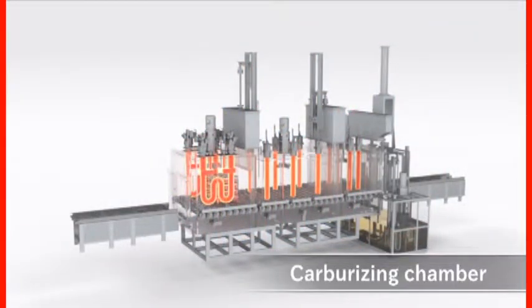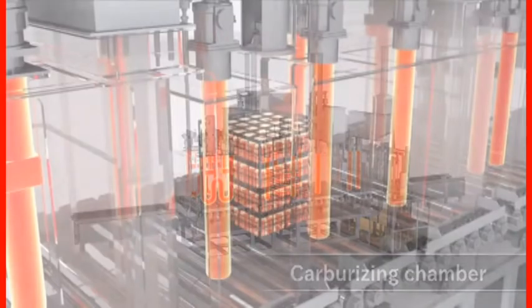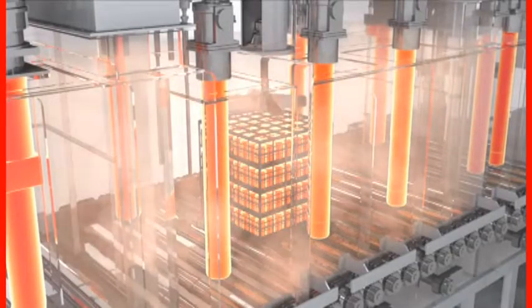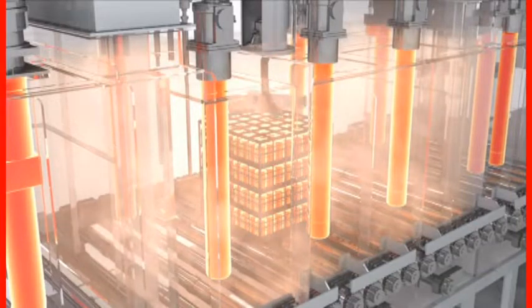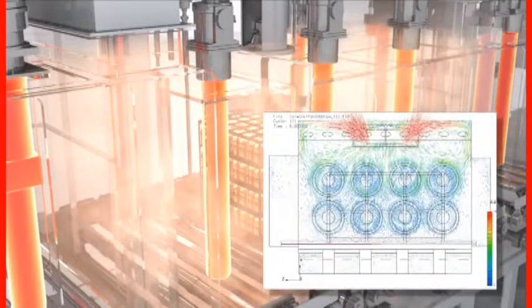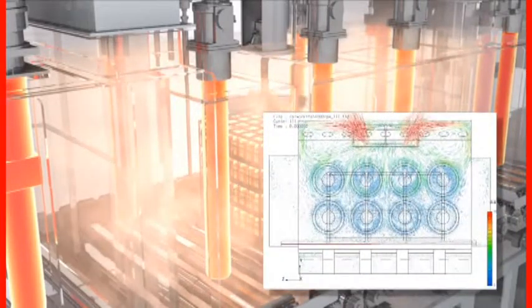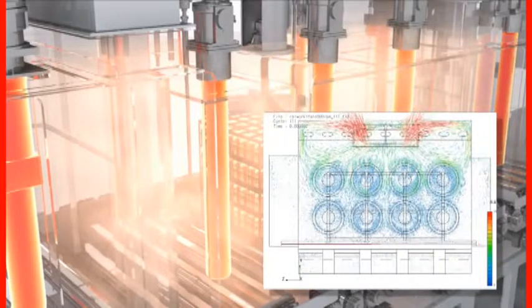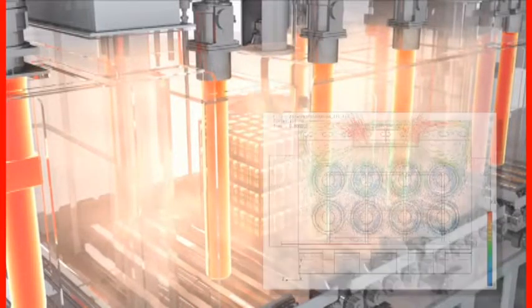After the heating chamber, the product goes to the carburizing chamber. To achieve uniform quality of the product, the system checks in advance the flow and amount of gas inside the furnace by simulation.